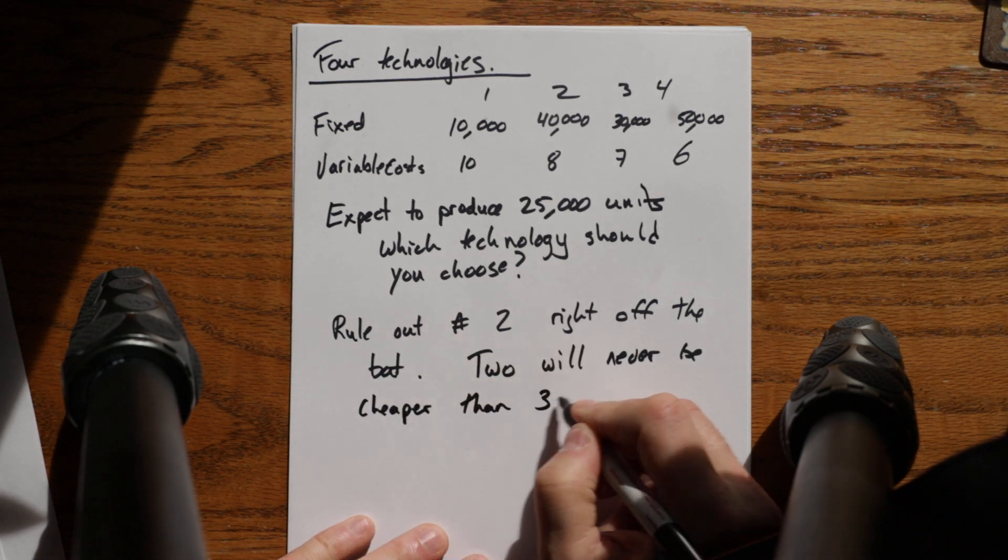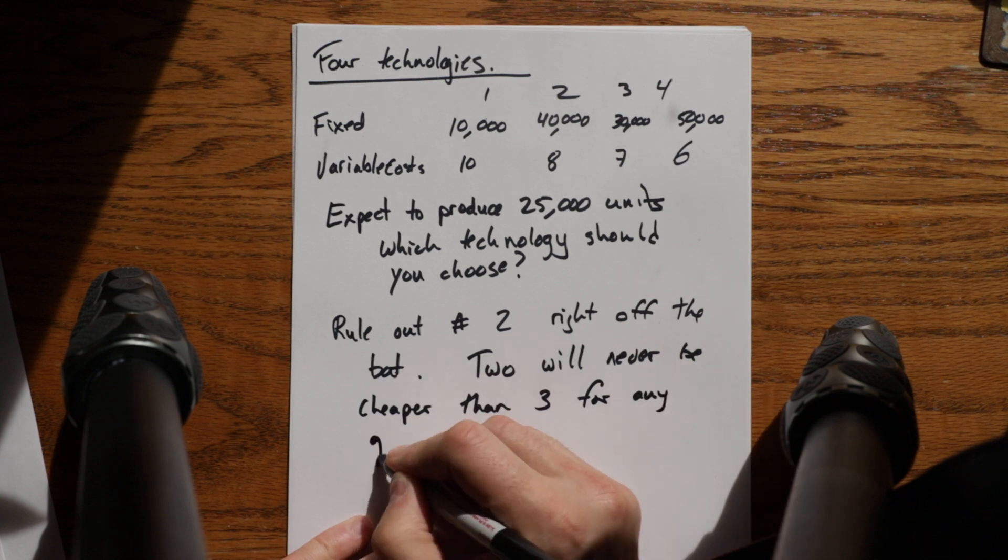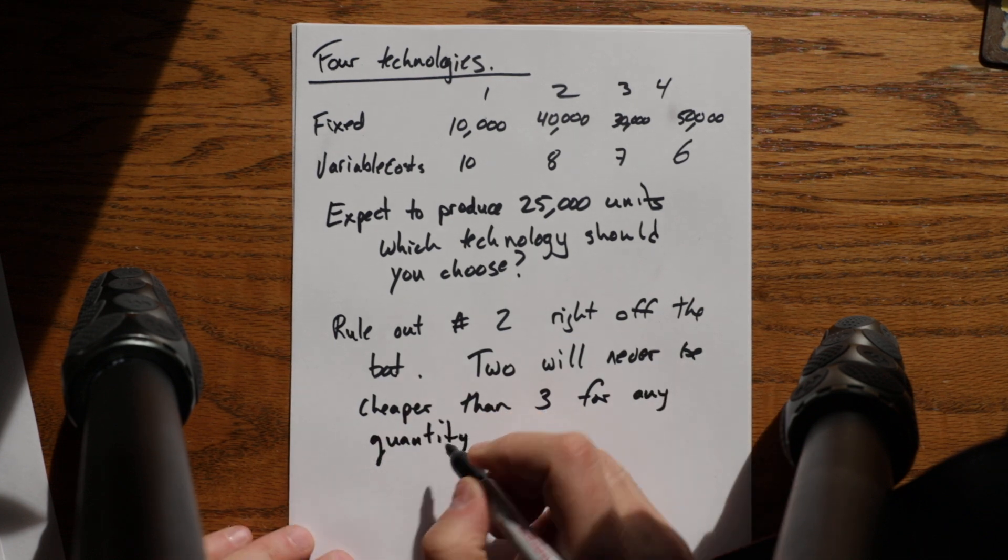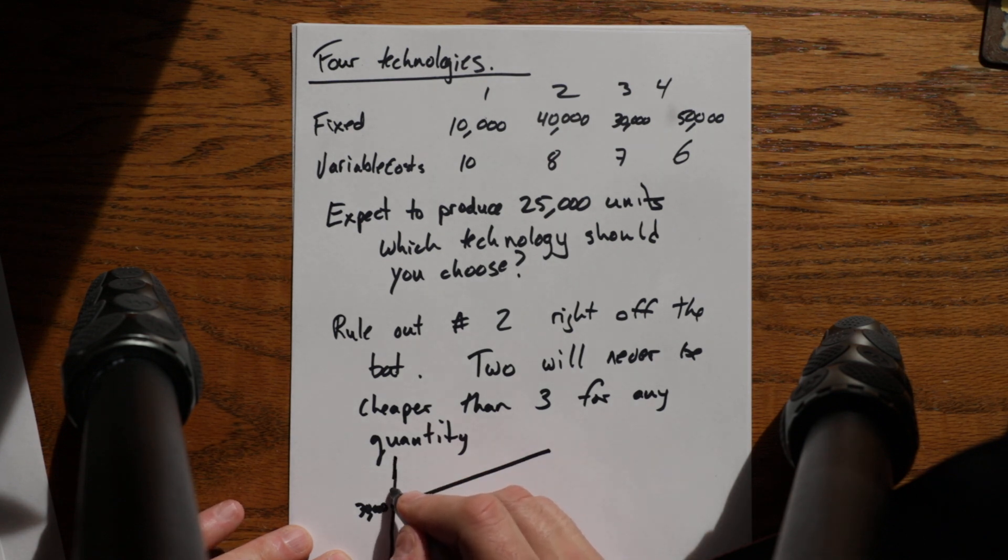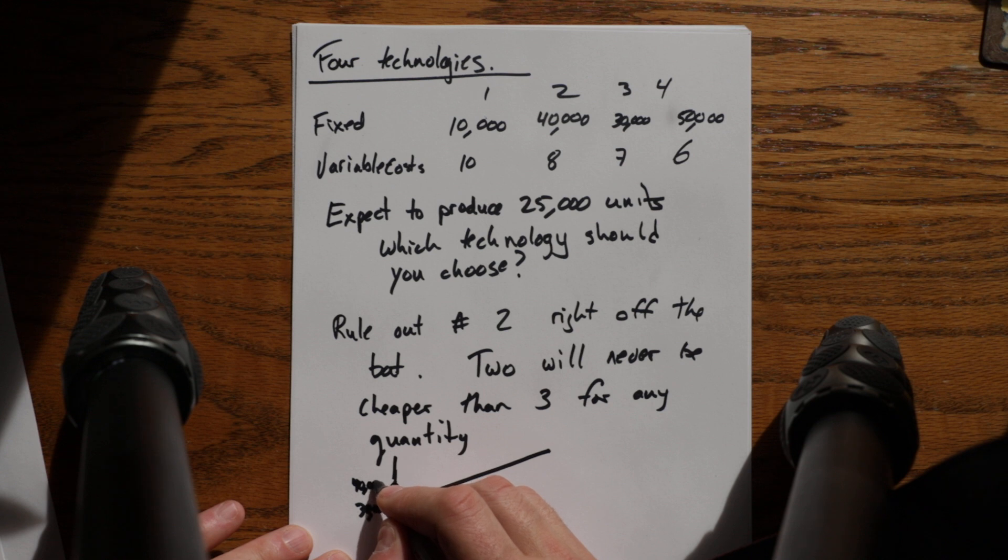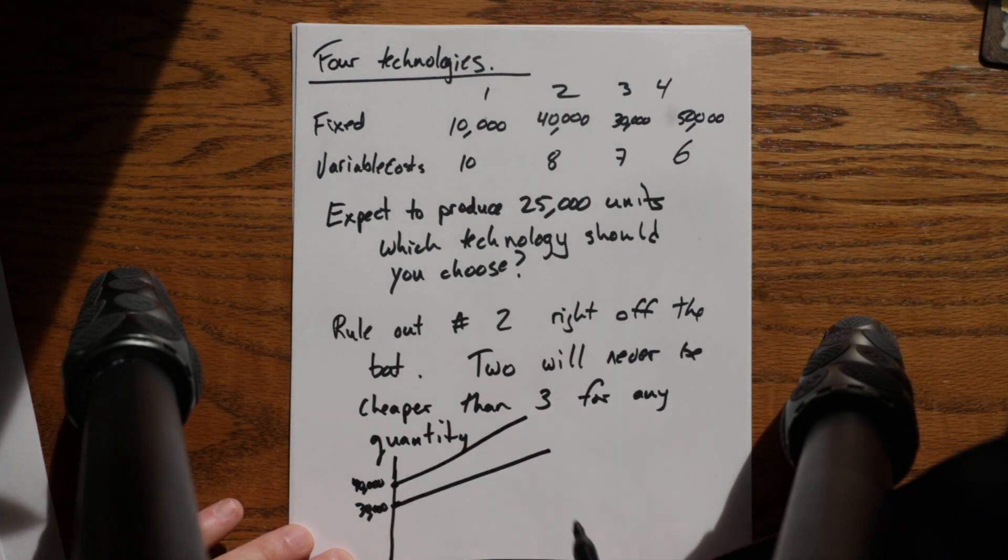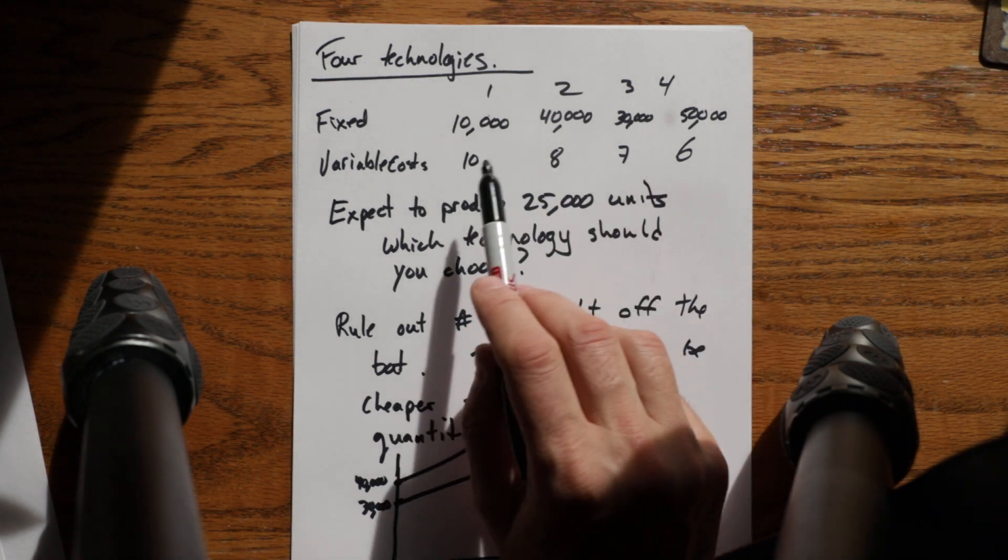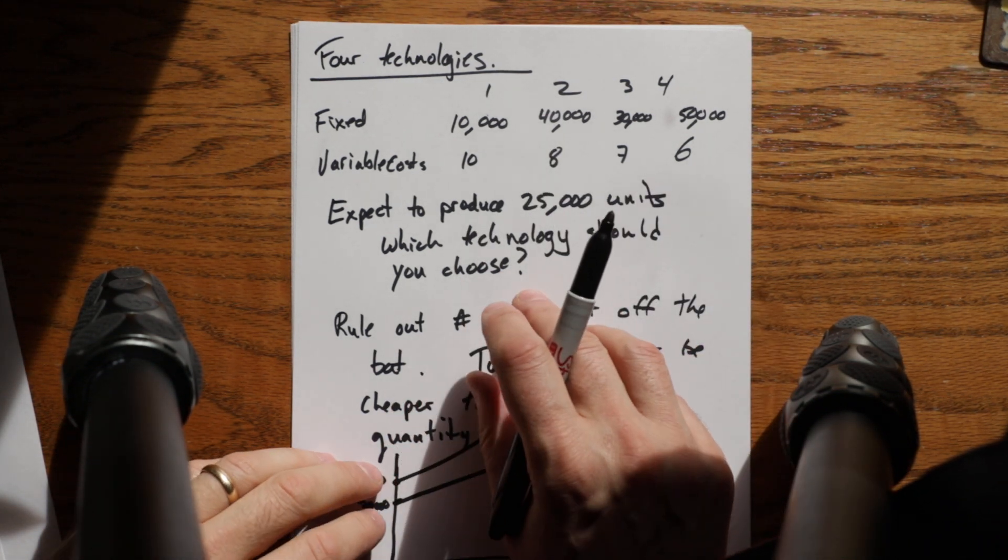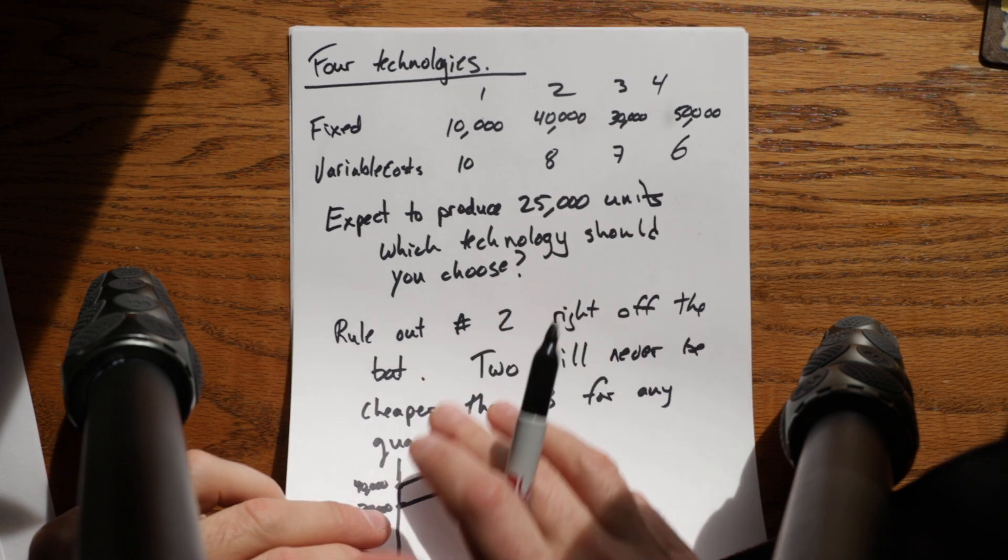For any quantity, right? So if I were to draw it, here is three at $30,000 and then it would go up at an angle like that which is $7, and two is here at $40,000 and goes up at a higher rate so that the lines get further apart. So there is never a time that two is the cheapest option. Just looking at it and comparing it to the other ones, I can say specifically that number two I'm going to ignore entirely.